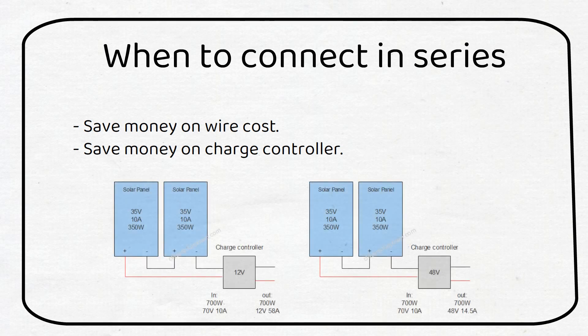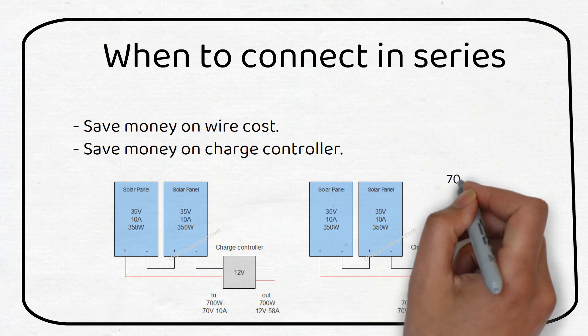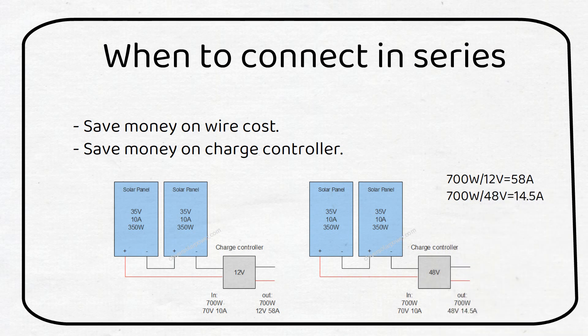Let's say you have an array of 700 watts and want to charge a 12 volt battery or a 48 volt battery. With a 12 volt battery you need a charge controller of 60 amps. While a 48 volt battery only needs a 15 amp charge controller.